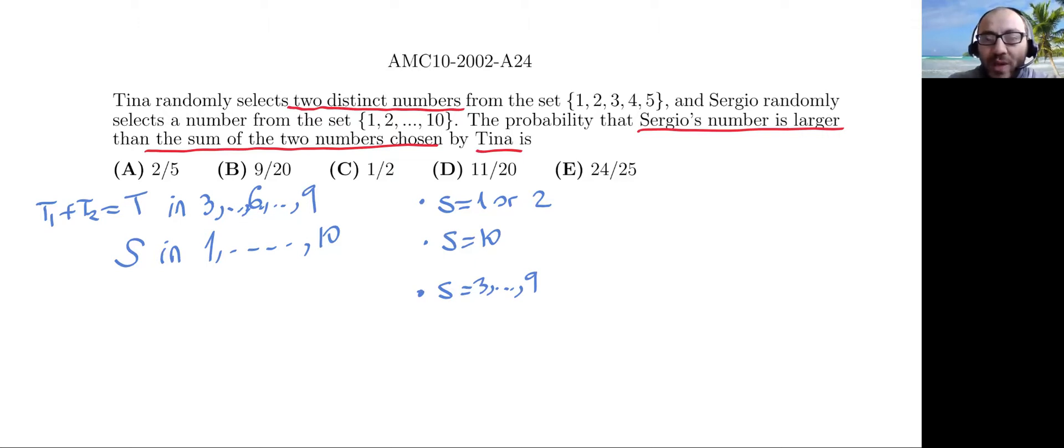Okay, so when S is 1 or 2, and since Sergio is picking his number randomly, the chance of this happening is 2 tenths, then the probability that S is going to be bigger than T is none, right? Because T is always at least 3. And if S is 10, probability 1 tenth, then the chance for S bigger than T is 1, it's always going to be bigger than T. And for this interval, there are 7 numbers left now, so 7 out of 10 cases, the chance that S is going to be bigger than T.